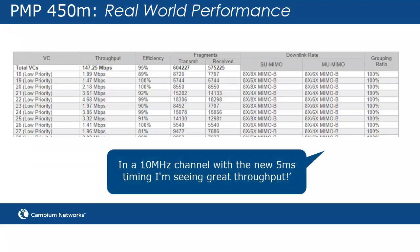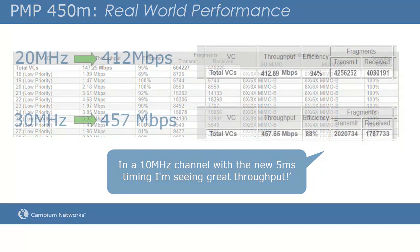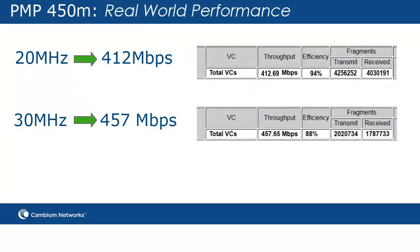In this 10 MHz example with the new 5-millisecond timing, the deployment is seeing great throughput. In some 20 and 30 MHz channel deployments, we can see up to 412 Mbps in 20 MHz and 457 Mbps in 30 MHz.